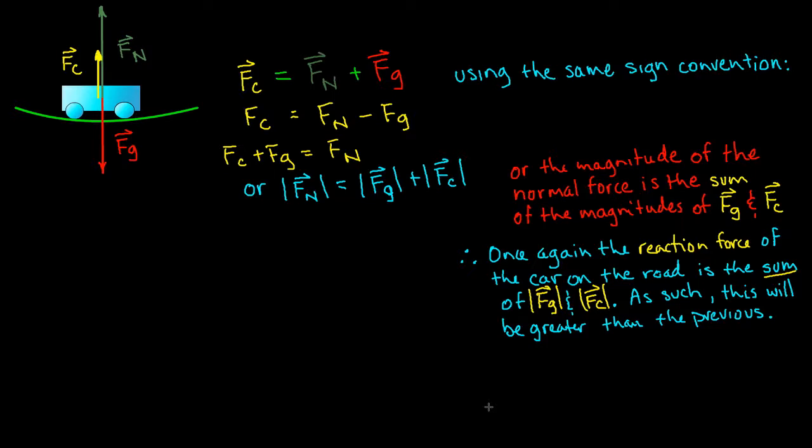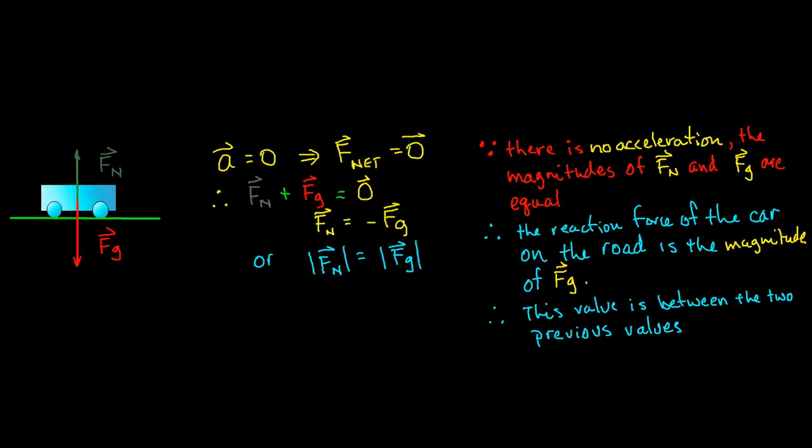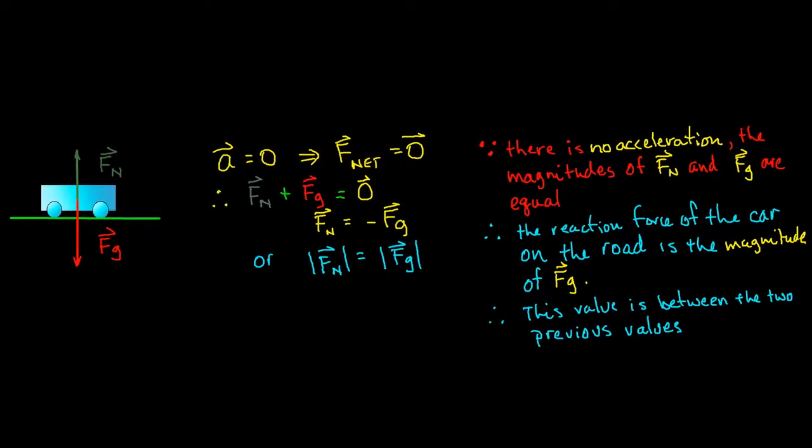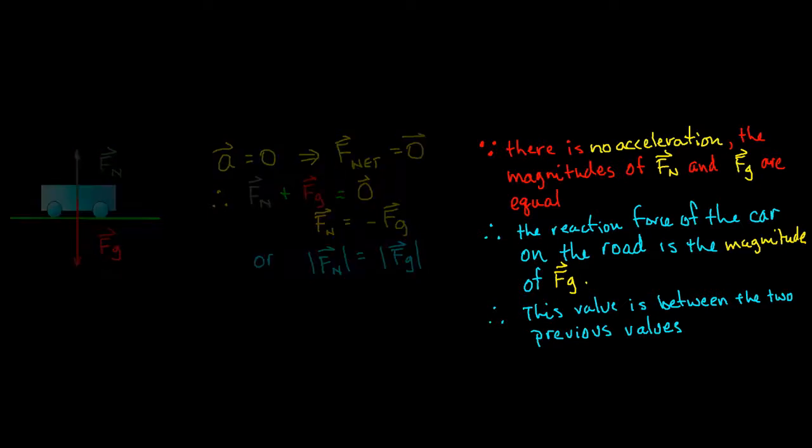And then our final situation is actually really easy. Let's take a look at it. With the flat road and the car traveling at a constant velocity we have no change in speed, we have no change in direction. And so as a result we have zero acceleration or F net must be equal to zero. So our vector equation which is just Fn plus Fg or vector Fn plus vector Fg equals the zero vector, we discover that vector Fn is equivalent to the negative of vector Fg. Or in terms of magnitudes, the magnitude of vector Fn is equal to the magnitude of vector Fg. So because there's no acceleration the magnitudes of Fn and Fg are equal.